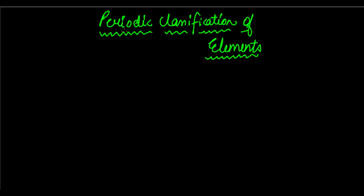Let's first look at the term 'periodic.' Periodic means something which happens over periods of time — something that happens repeatedly, many times. So when you join the terms 'periodic' and 'classification,' periodic classification refers to a form of classification in which we group elements based on the repetitive nature of their properties.